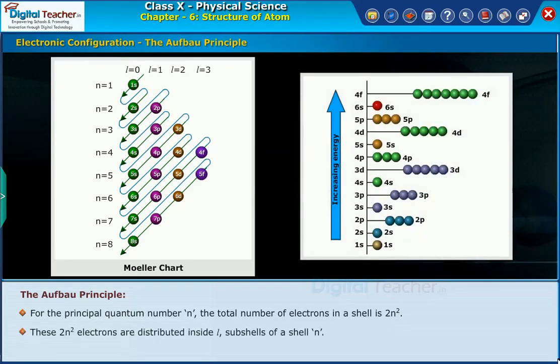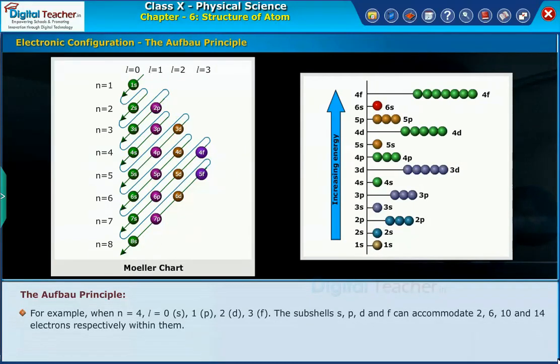These 2n² electrons are distributed inside l sub-shells of a shell n. Each sub-shell l accommodates 2(2l+1) electrons inside it. For example, when n=4, l=0, 1, 2, 3.